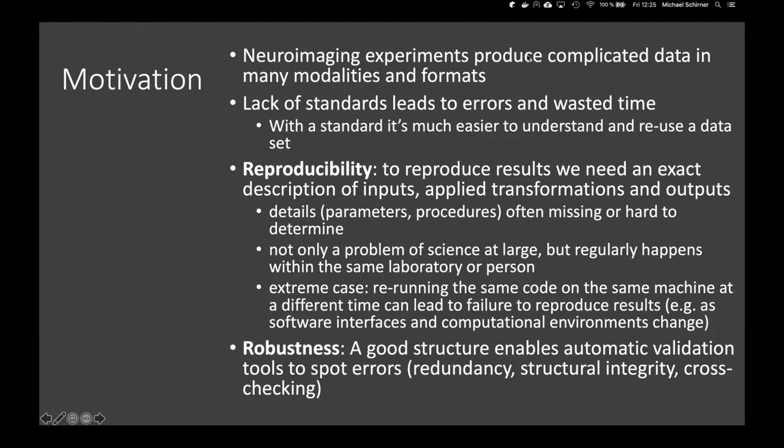This is important for reproducibility. In order to reproduce results, we need an exact description of the inputs, the transformations applied, and the outputs. Even when something is specified in a very detailed manner in a paper, there will be some parameters or procedures that are missing or hard to determine from the paper.